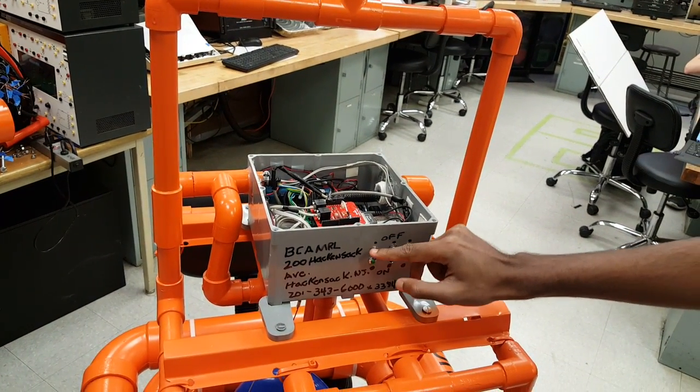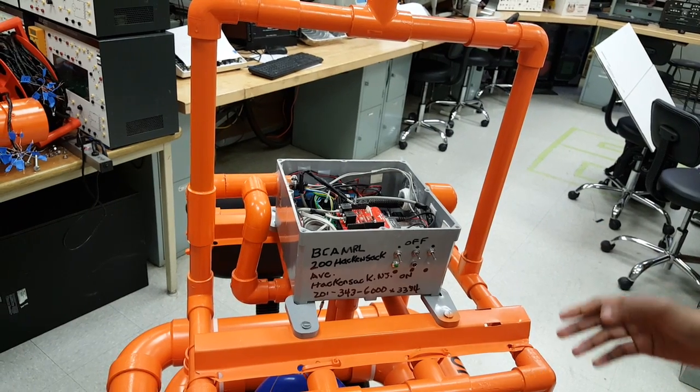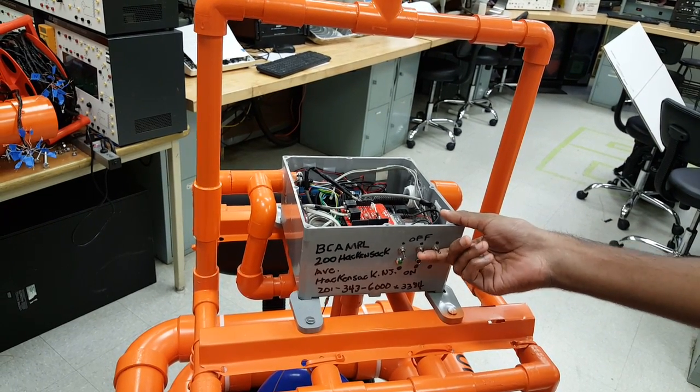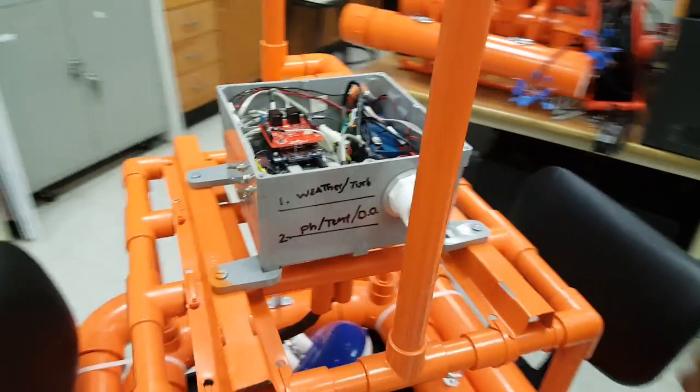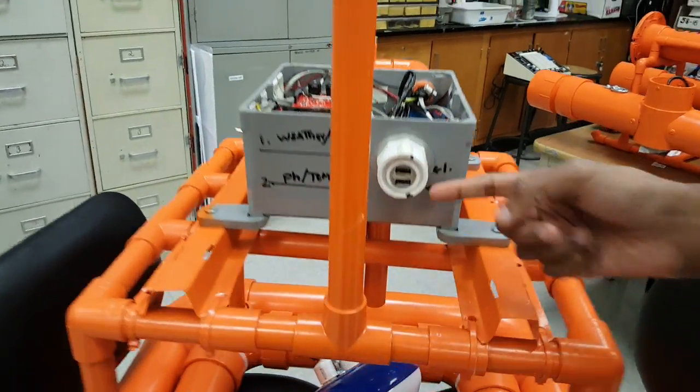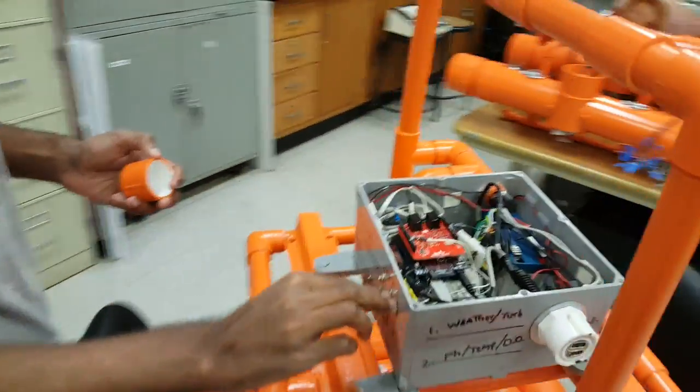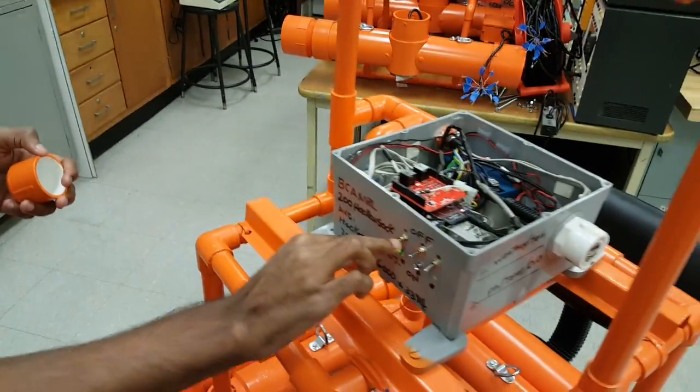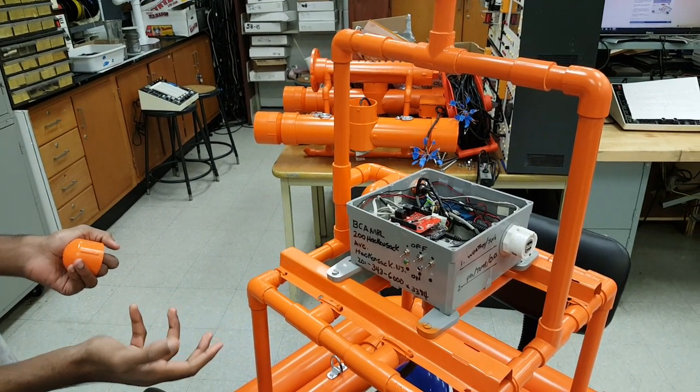These turn on the microcontrollers. To operate this buoy on a normal basis you would start with all the switches in the off position and you would use these USB ports and a laptop with the Arduino IDE and the appropriate code to upload code to each of the respective boards. Then you would place the cap back on and turn all the power switches on after unplugging the laptop and you would deploy the buoy for the desired period of time.